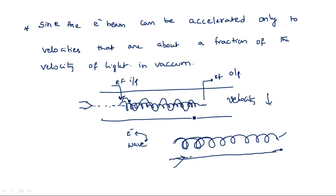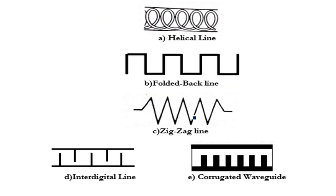Several types of slow wave structures are generally available. There are five different types, and the most commonly used one is the helical line — which we have already seen used in the TWT structure. Because of this helical shape, the signal takes multiple rotations and reaches the other end very slowly. The second type is the folded back line, which is similar to the helical line but the wave folds in the forward direction, going up and down so the signal is slowed down.